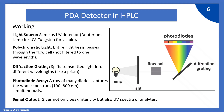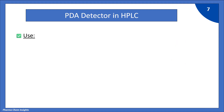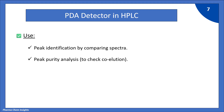The PDA detector also provides UV spectra of analytes. Its uses in HPLC include peak identification by comparing spectra, peak purity analysis to check for any co-eluting peaks, and structural characterization support.